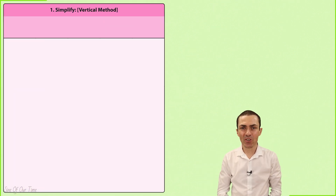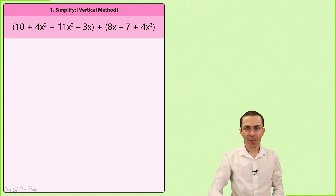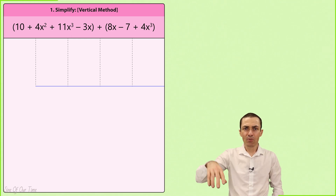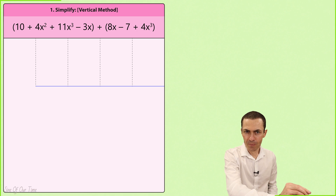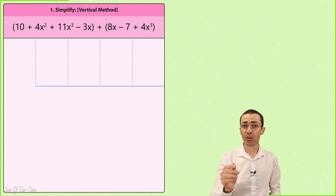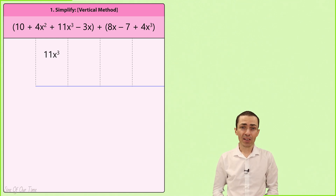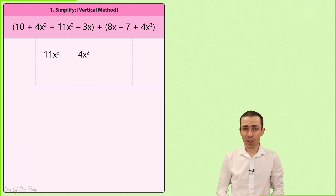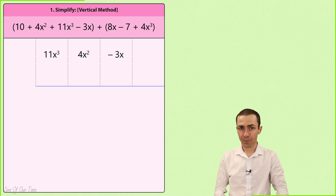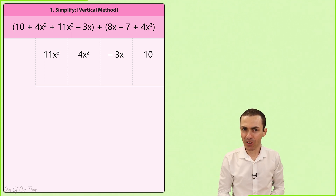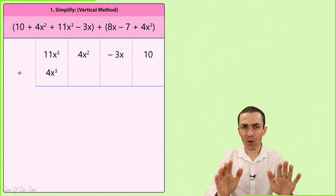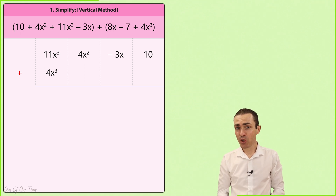Now let's add these polynomials by using the vertical method. This involves creating virtual columns for each of the degrees of x, usually starting from the highest degree down to the lowest degree. When we consider the first polynomial, 11x cubed has the highest degree and so it is written in the first column. 4x squared has the next highest degree so it is written in the second column, followed by negative 3x in the third column, and 10 which has the lowest degree is written in the last column. When we consider the second polynomial, 4x cubed is written in the first column.